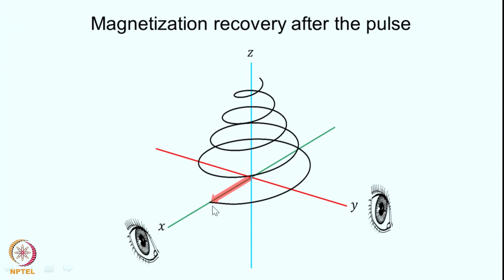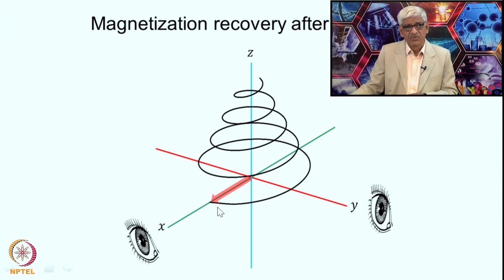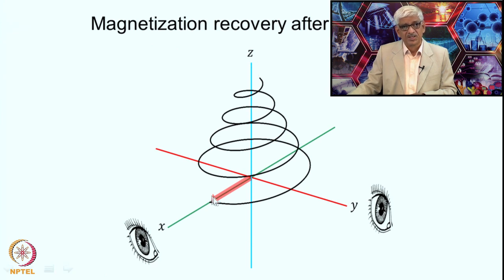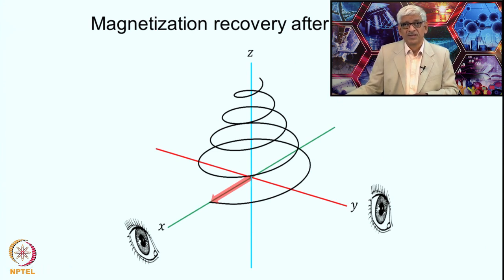After the pulse, there is no perturbation. If a 90-degree pulse has placed the magnetization along the X axis, it must recover back to the Z axis, since only the H0 field is present. The magnetization precesses in the transverse plane while recovering along Z, following a spiral pathway — both T1 and T2 relaxation are operative.